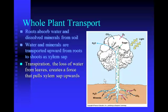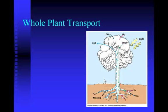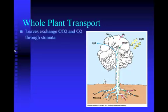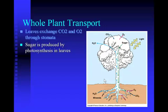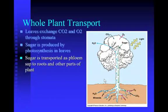When you remove the water and the air from the top of the straw, the water below at the bottom of the straw gets pulled up — and that's kind of what happens in the plant. The leaves exchange CO2 and oxygen through the stomata, and that CO2 is used to produce sugar in the leaves through photosynthesis. After that sugar is manufactured, it travels back down the phloem to the roots and other parts of the plant for storage.